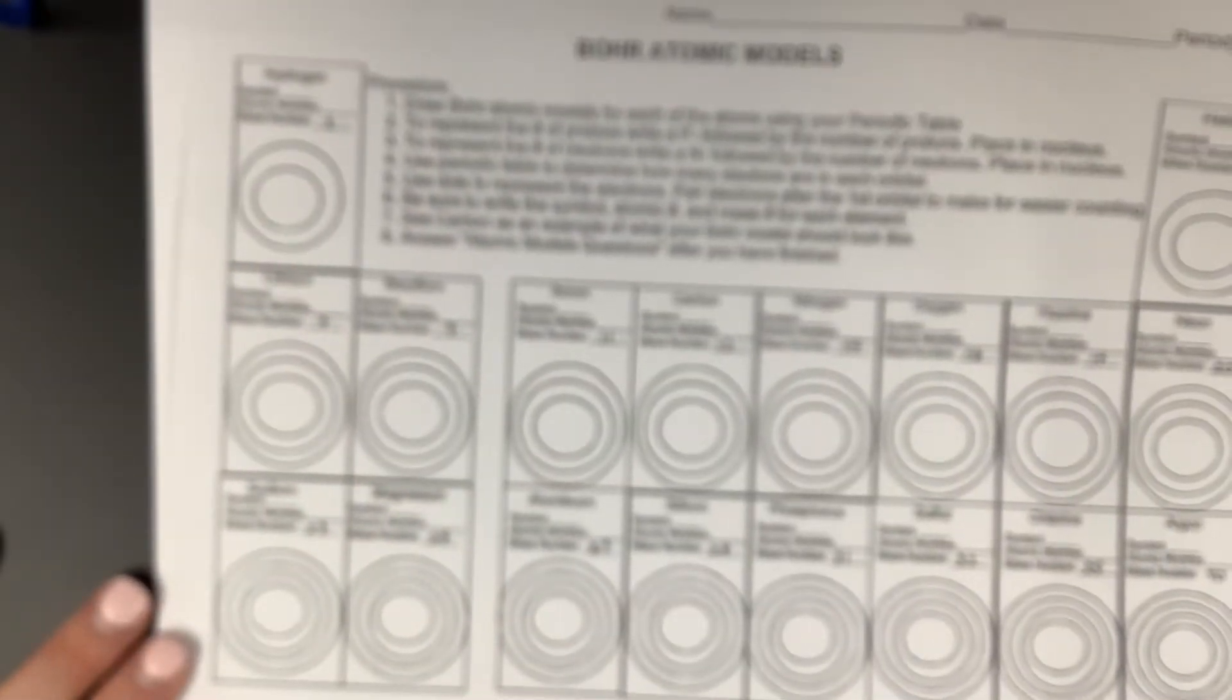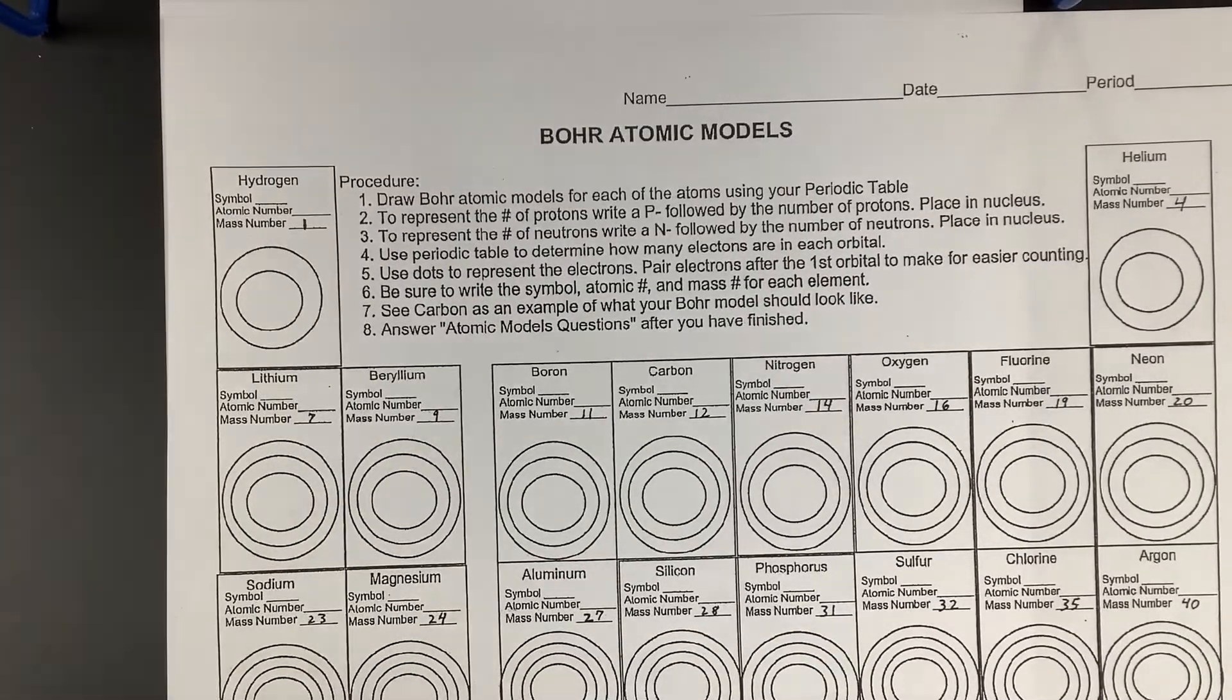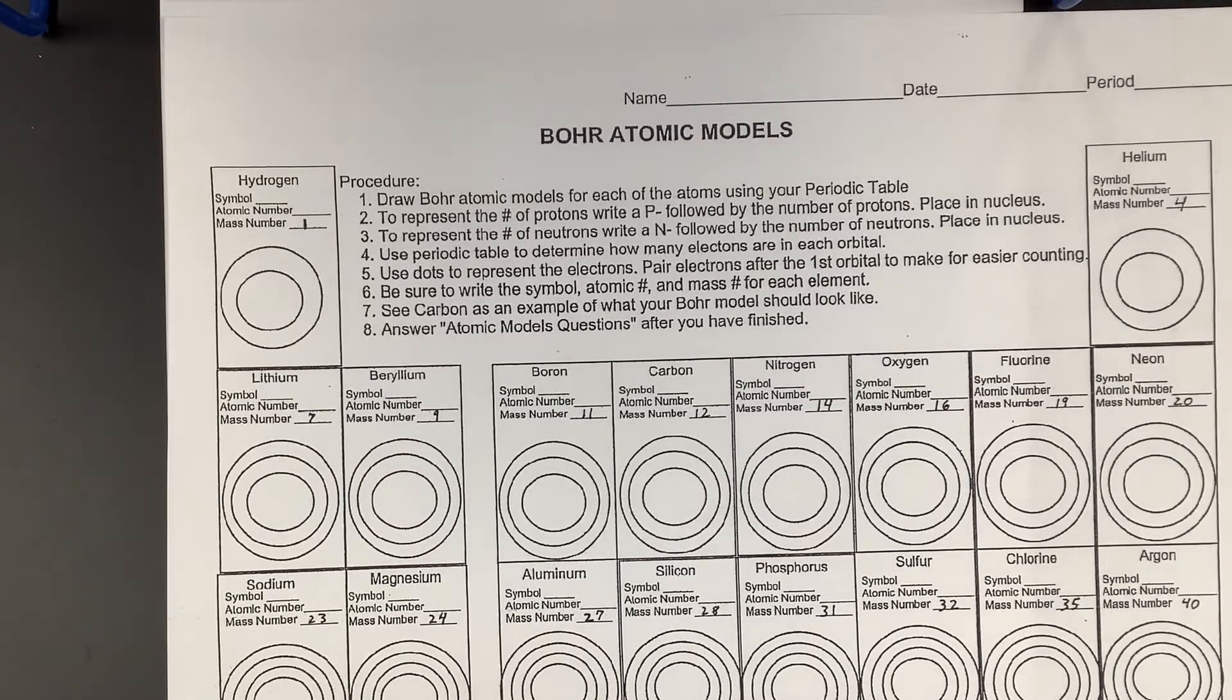Does it look kind of like your periodic table? Yeah. You got hydrogen right here, helium right there, lithium, beryllium. If you skip across that gap, boron, carbon, nitrogen. So when we draw these Bohr models, we're going to be drawing them in the order they sit on the periodic table, the first three rows.